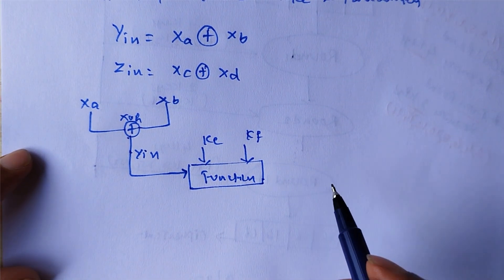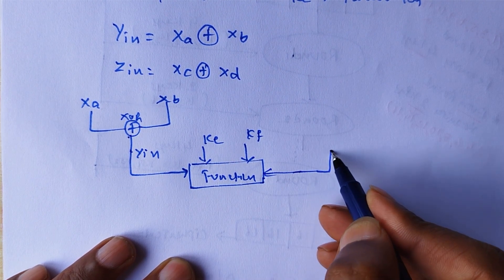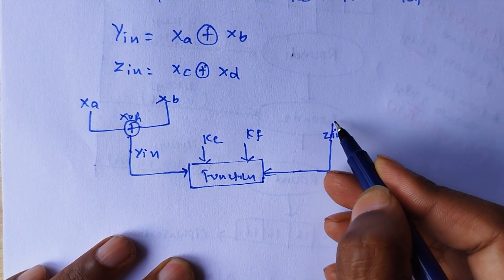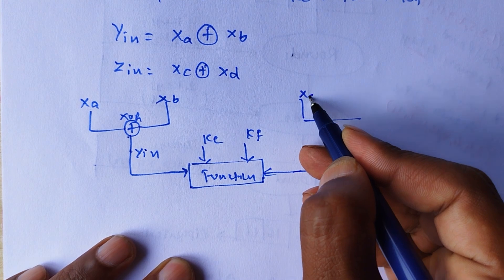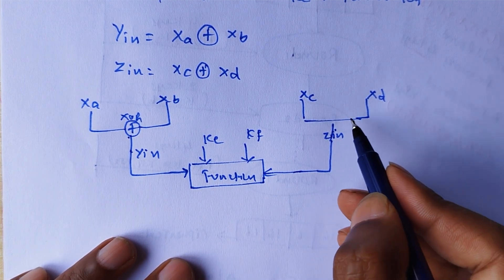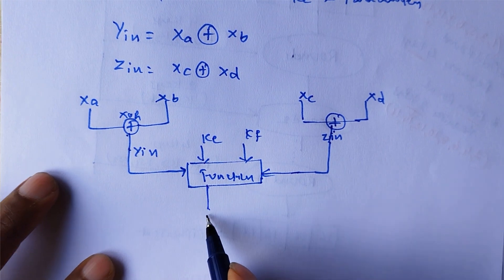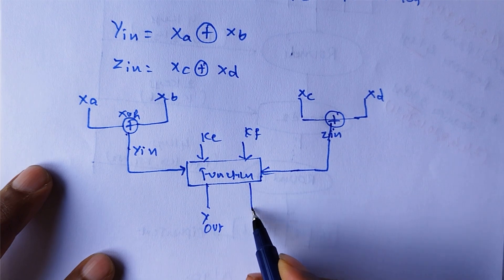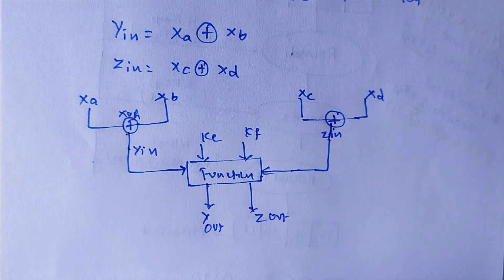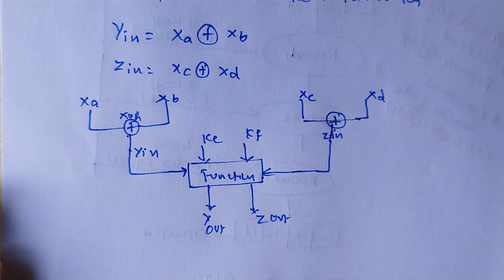For the right side part, we again have 2 inputs. Z_in is the combination of XC and XD, and performing the XOR operation on the result gives us Y_out and Z_out. This is about the even round operations.